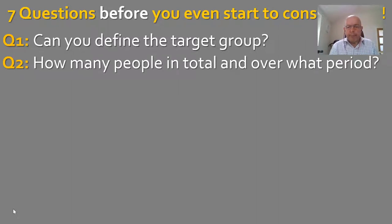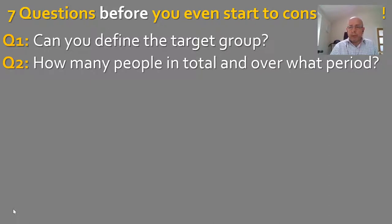Secondly, how many people are in the target group and over what period are you going to engage with them? If it's 20 people engaged once, there's a certain kind of investment to support that. But if it's 2,000 people over an 18-month period a couple of times each, there's a different level of investment — ultimately it comes down to cost per delegate.